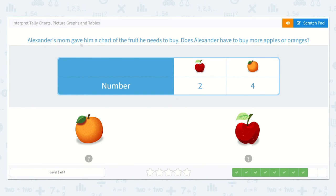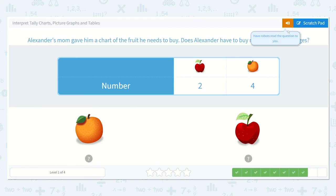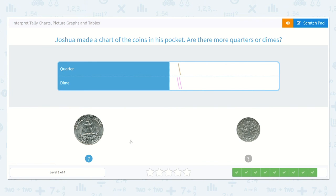Alexander's mom gave him a chart of the fruit he needs to buy. Does Alexander have to buy more apples or oranges? Here I see, here's the number. Two and four. So these go together, and these go together. So does he need to buy more apples or more oranges? Yes, more oranges. Four is greater than two. So we know he's going to buy four oranges, which is more than two.